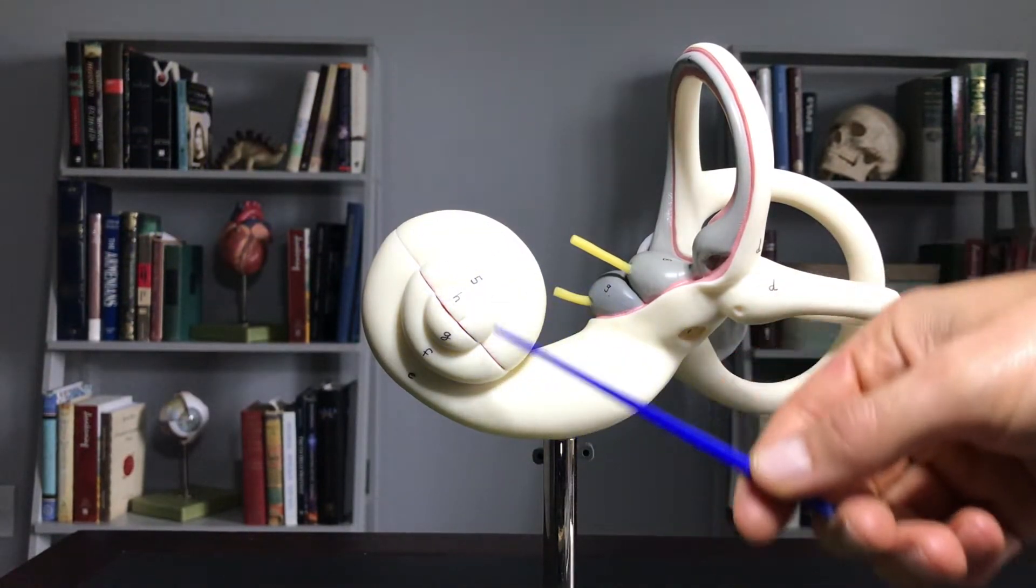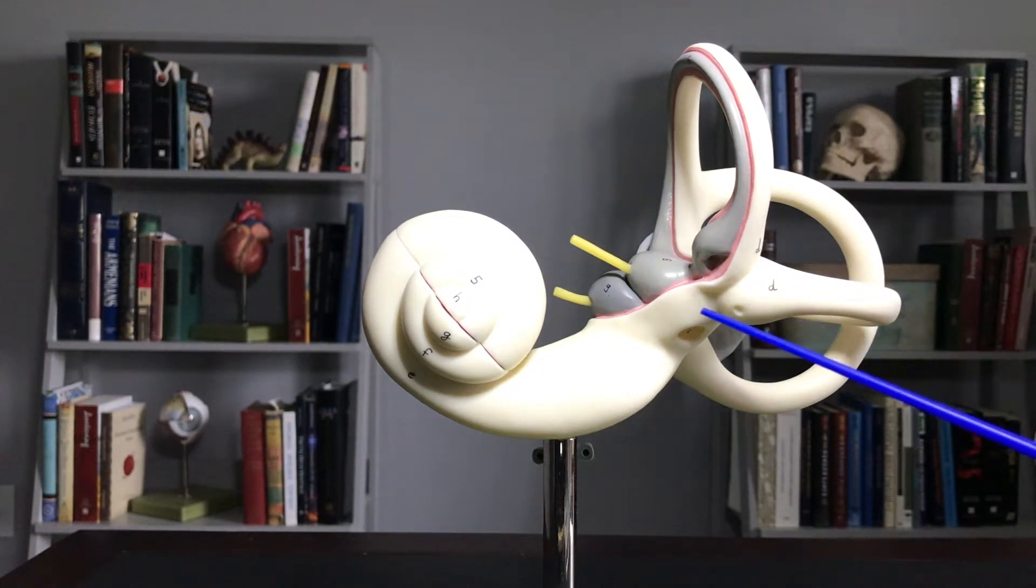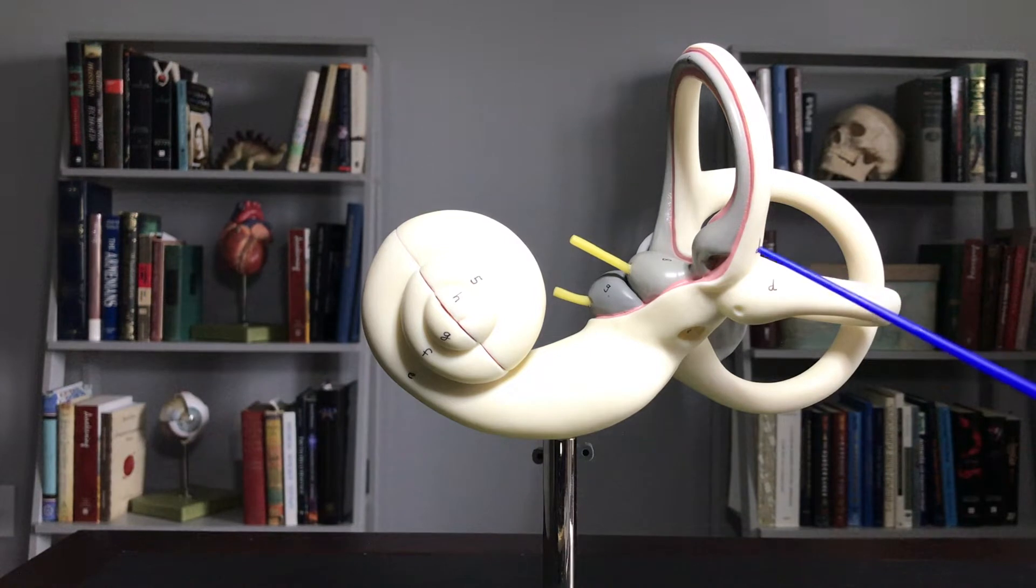Because of all the twists and turns and convolutions that you see here, we call this structure of the inner ear the labyrinth. The bony labyrinth has three portions to it.